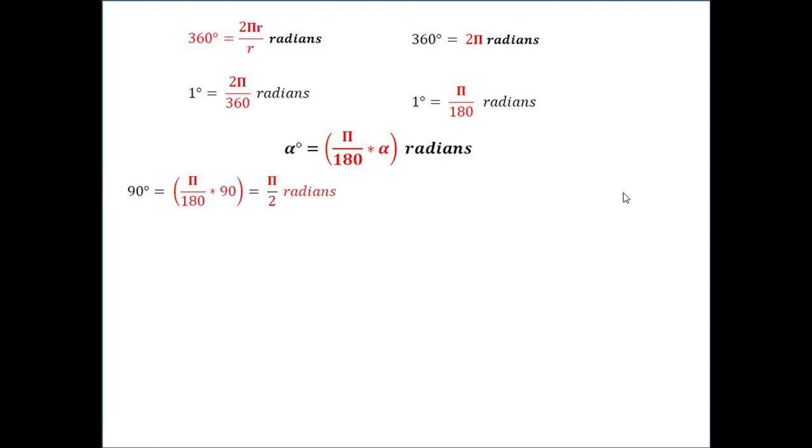For example, for 90 degree, 90 degree can be written as π by 180 multiplied by 90 thus it comes π by 2 radians.